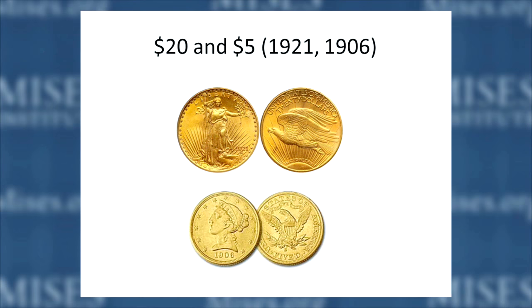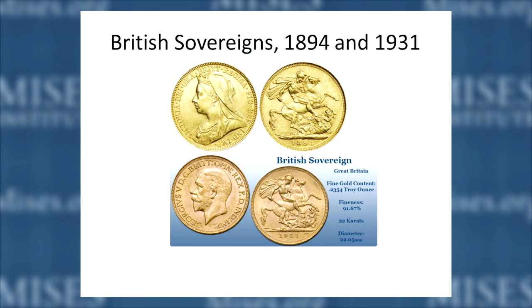Here are $20 and $5 gold coins from 1921 and 1906. They don't look much different from the British sovereigns from 1894 and 1931. You could go to Britain with American gold coins and purchase things — to the extent they had confidence in the U.S. stamp, they would accept them by weight. In the 19th century, not only did you not need a passport to travel in Europe (except for Russia), you just needed to bring gold or silver. Your own country's coins would be accepted as money. There was one money and free movement of people — this is really the glory of classical liberalism.